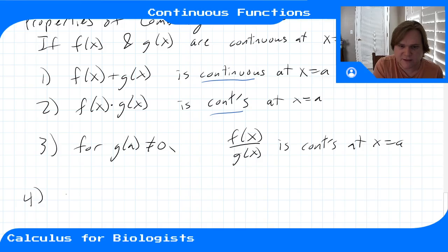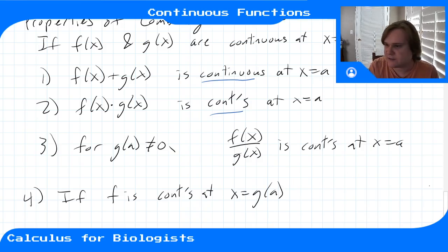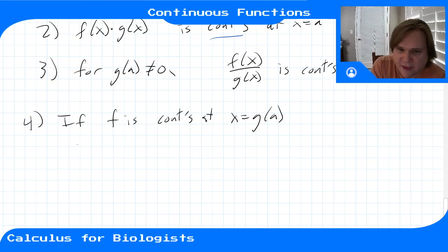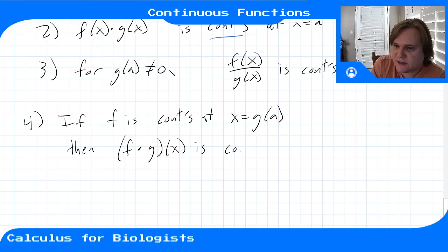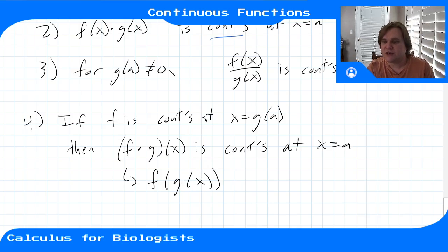The last property is for composition: if g is continuous at a, and f is continuous at g(a), then the composition f of g(x) is continuous at x equals a. So f composed with g — written f(g(x)) — is continuous: g is continuous at a, giving a nice output, and then f is continuous at g(a), which is the inside value.